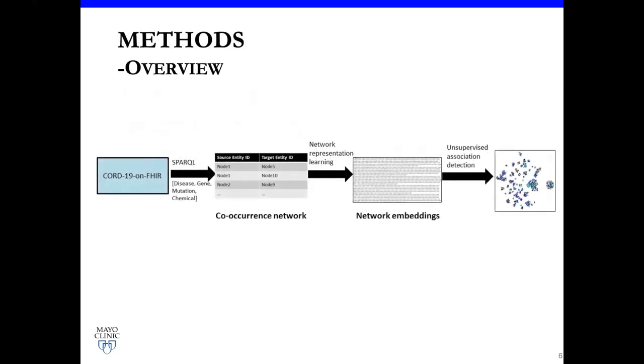Here is the brief overview of the workflow of our study. As I mentioned, the first step is to build a co-occurrence network from COVID-19 on FHIR. Then we build the embedding matrix based on this co-occurrence network. After that, we show some unsupervised learning applied on the network embedding to show visualization and semantic similarity measurement. Let me first dive into the first portion, how we build this co-occurrence network.